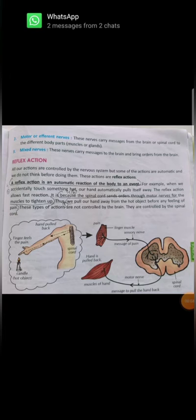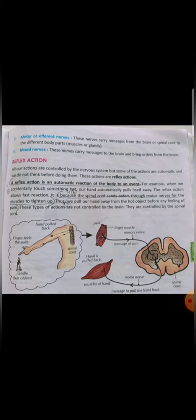The next topic is reflex action. What is reflex action? It is an automatic reaction of the body to an event. All our actions are controlled by the nervous system, but some actions are automatic and we do not take time or think before doing them — these are reflex actions. For example, when we accidentally touch something hot, like a hot plate or a hot object, or even while ironing clothes — if we touch a hot iron, our hand automatically pulls itself away. The reflex action allows a very fast reaction; we don't take any time thinking about what to do.